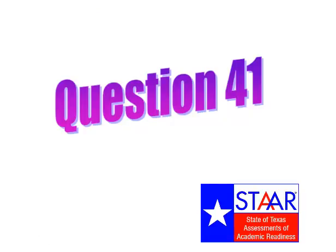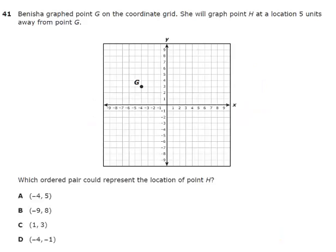Question 41. Benisha graphed point G on the coordinate grid. She will graph point H at a location five units away from point G. Which ordered pair could represent the location of point H? Pause the video now.